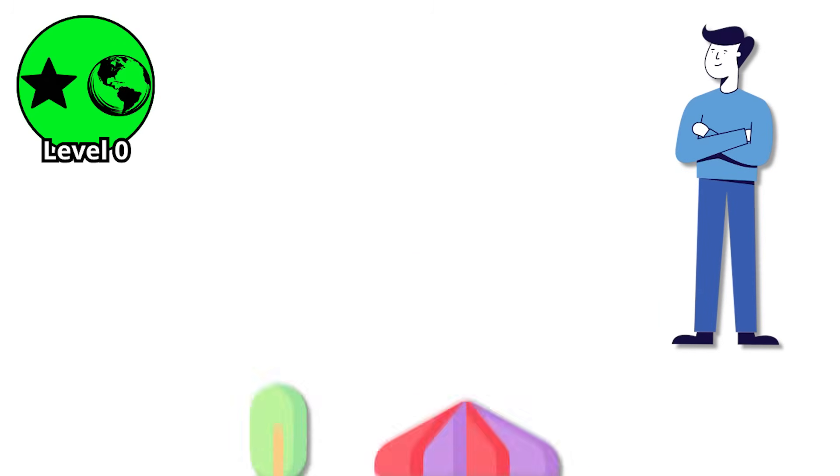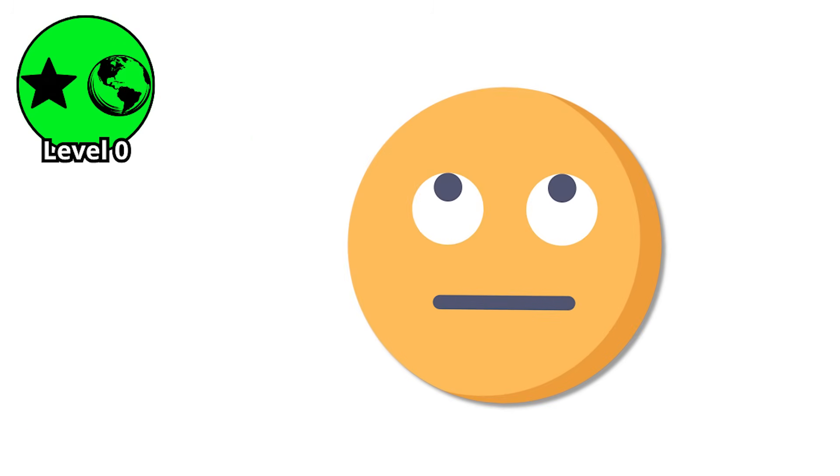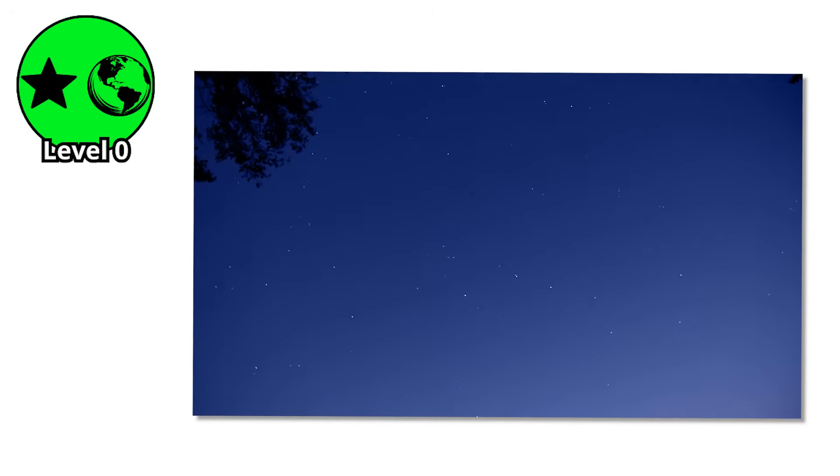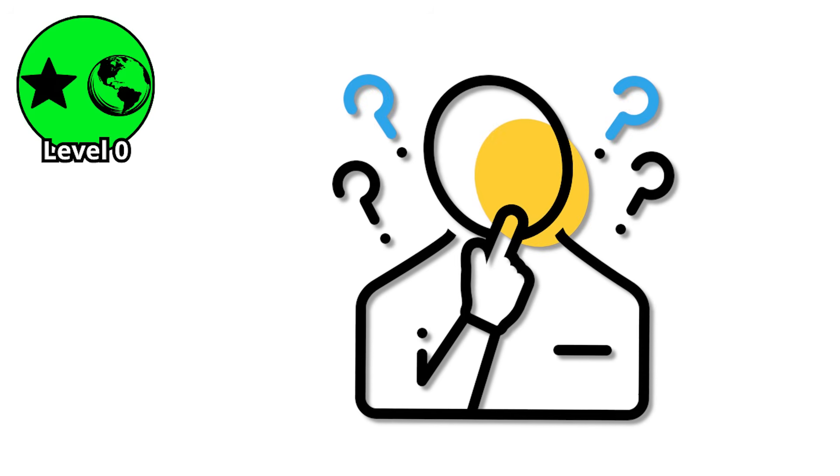Level 0. You're standing in your backyard on a clear night, looking up at what seems like a thousand tiny pinpricks of light. They all look the same, don't they? Little white dots scattered across the black. But here's what'll mess with your head.